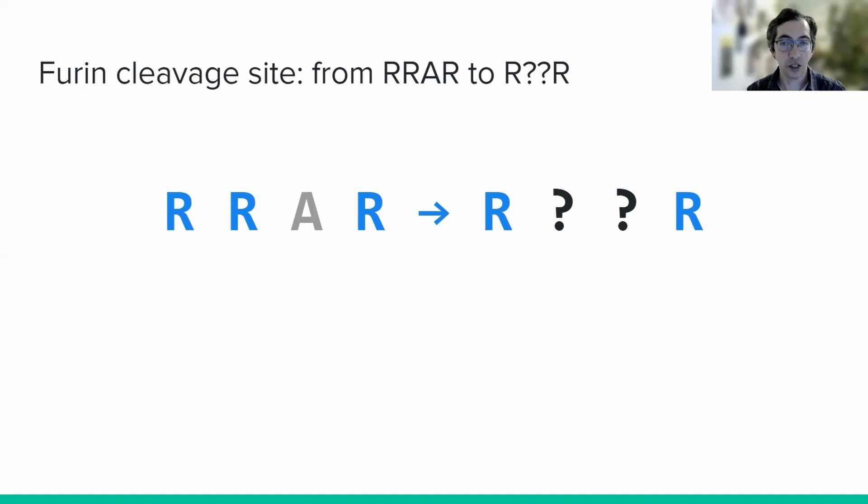When generalizing our search to this more generalized furin cleavage site pattern, it turns out that the furin cleavage site seems to be a fairly common feature of this viral group. The presence of the furin cleavage site in multiple natural coronaviruses is strong evidence that this insertion may not have been artificial, but rather it may have been a product of natural evolution across many coronavirus strains.